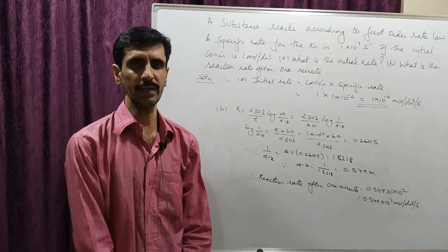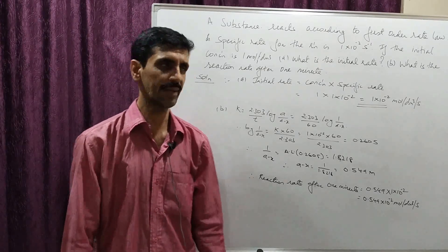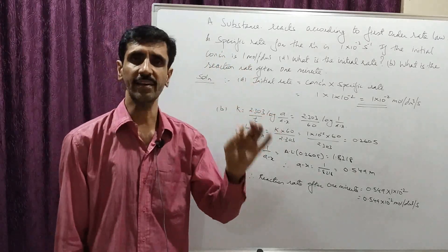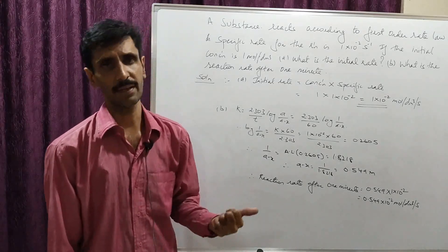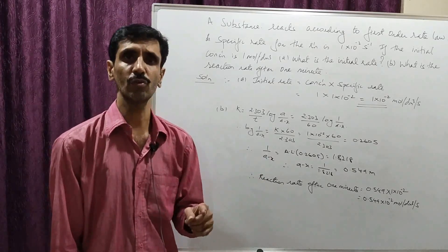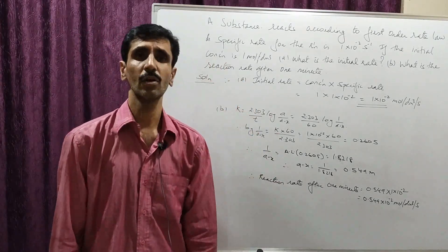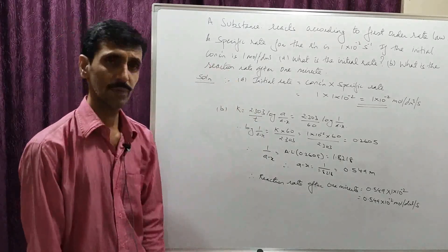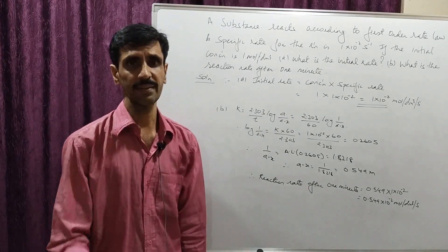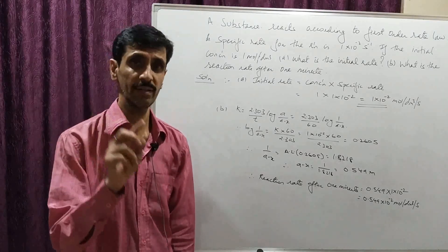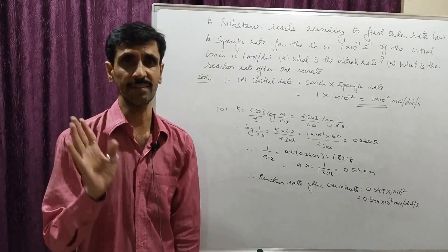We begin with the first numerical. A substance reacts according to the first order law and the specific rate constant given is 1×10⁻² per second. The initial concentration given is 1 mole per dm³. We need to find two things: what is the initial rate, and what is the rate of the reaction after 1 minute, which means 60 seconds.